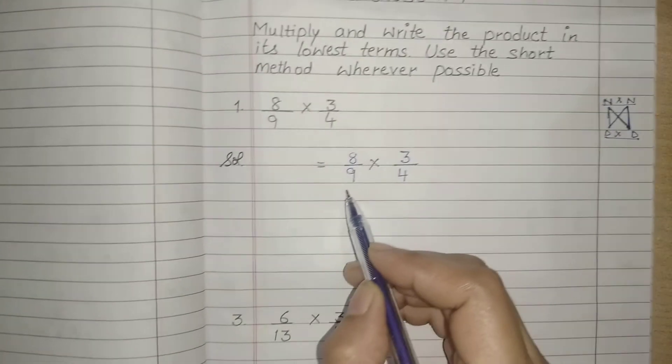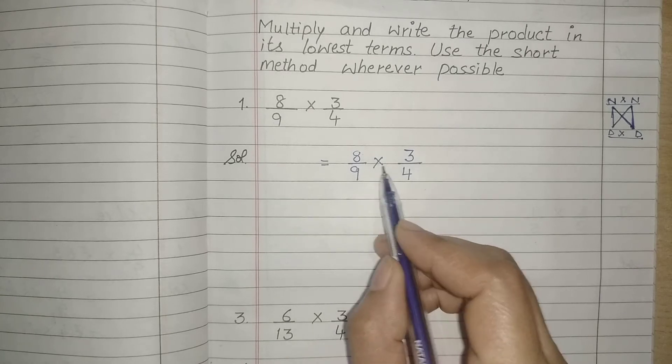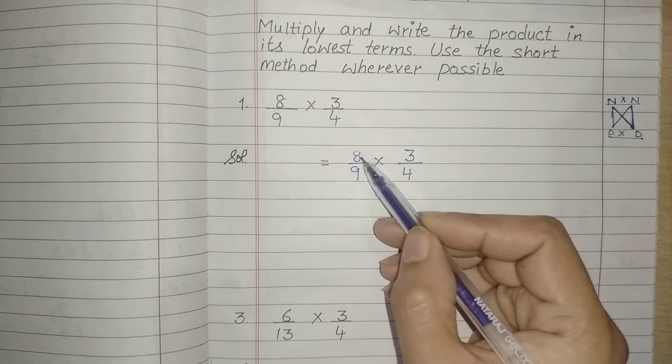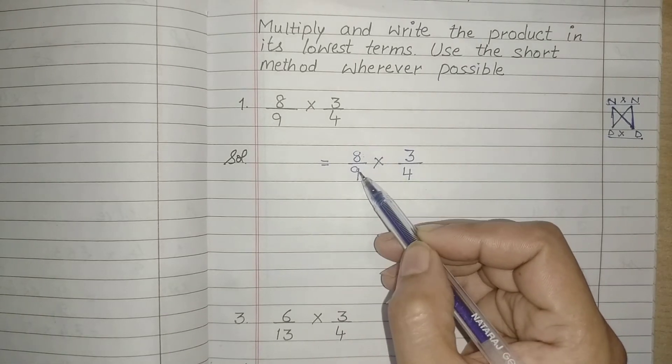So let's see in this question: 8 upon 9 multiplied by 3 upon 4. First we will see how cancellation is possible.